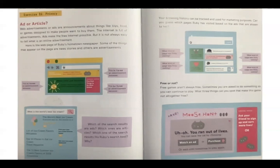Free or not? Free games aren't always free. Sometimes you're asked to do something so you can continue to play. What three things can you spot that make this game not altogether free? Free mouse hunt. Uh-oh. You ran out of lives. You can save the cat by choosing watch an ad or purchase diamonds or wait until tomorrow to play again. Limited offer. Ask your friend to sign up and earn more lives.